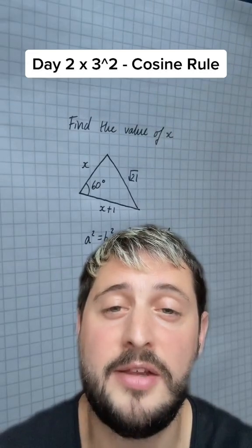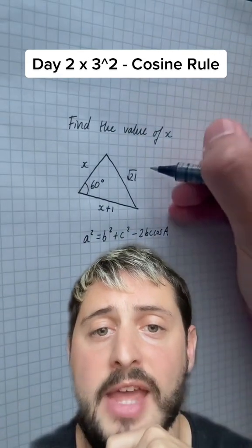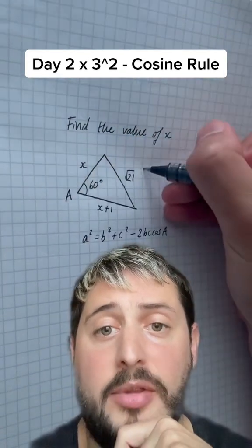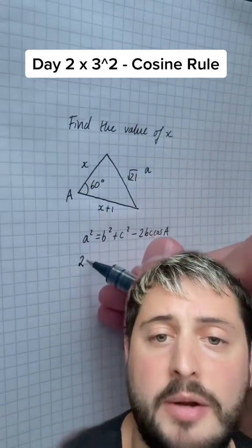Day 18, the cosine rule. Yes, it's in GCSE, but it's also in A level. All you need to know about this formula is which the A values are. Capital A is the angle and little a is the side opposite. B and C, it doesn't matter which way around the sides go.